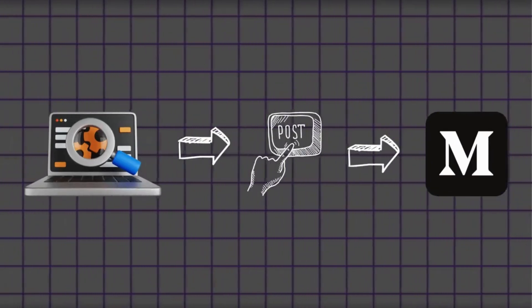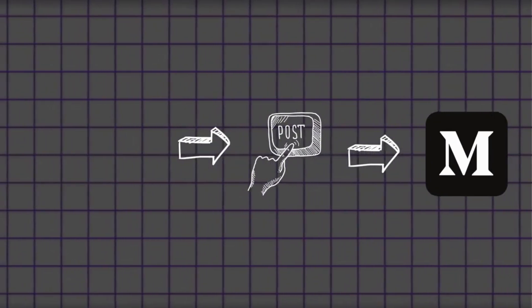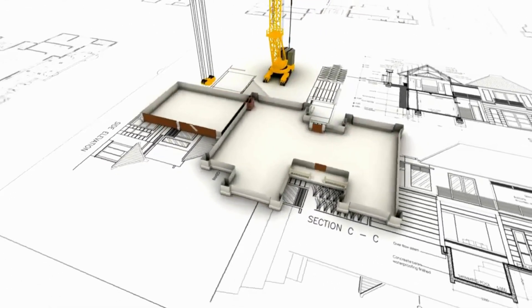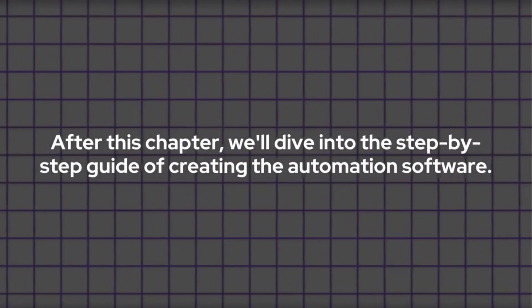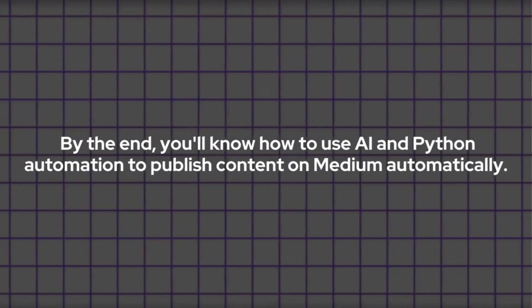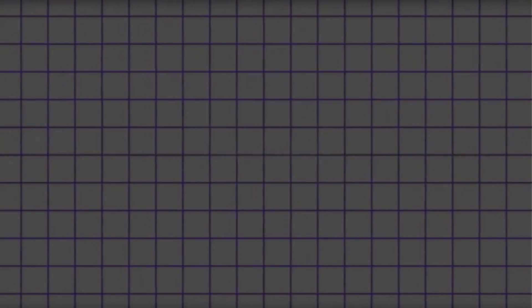In this chapter I'll give you an overview of the automation system we'll be building. It acts like software that will automatically publish content on Medium every day without needing your involvement. First we will understand the big picture, then we will start building it step by step. By the end of this module you'll know how to use AI and Python automation to publish content on Medium automatically. As you can see on your screen, this is the overview of our system.